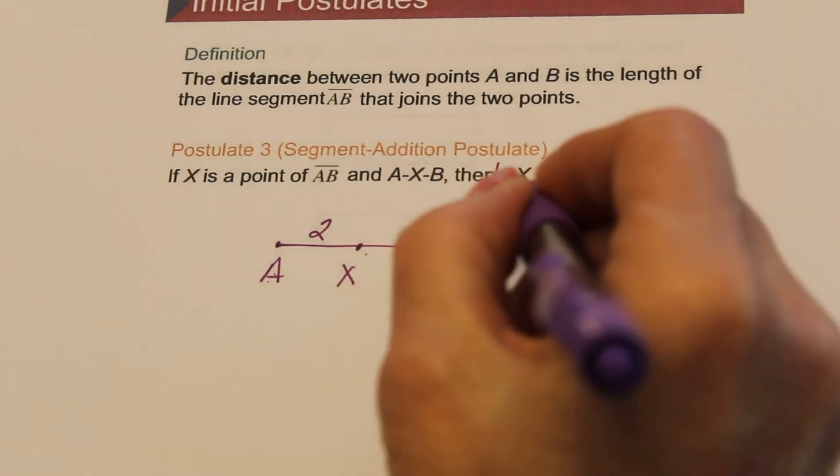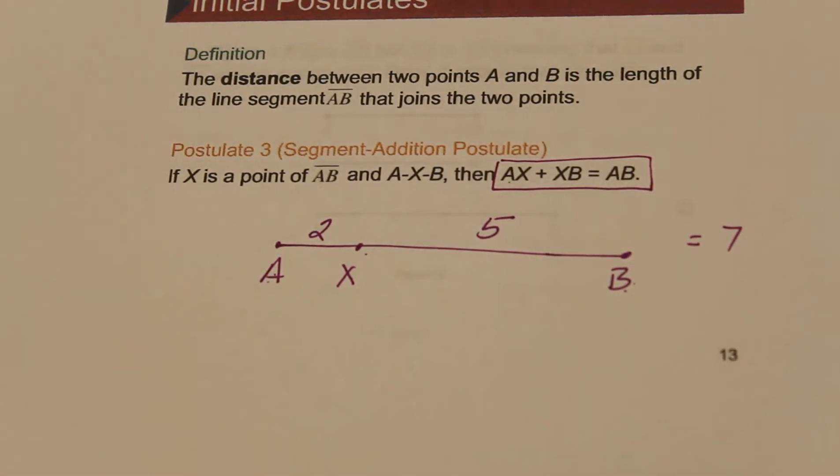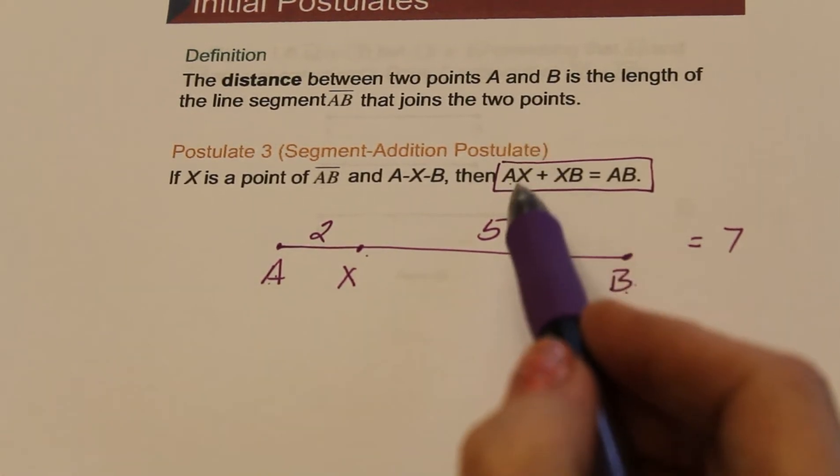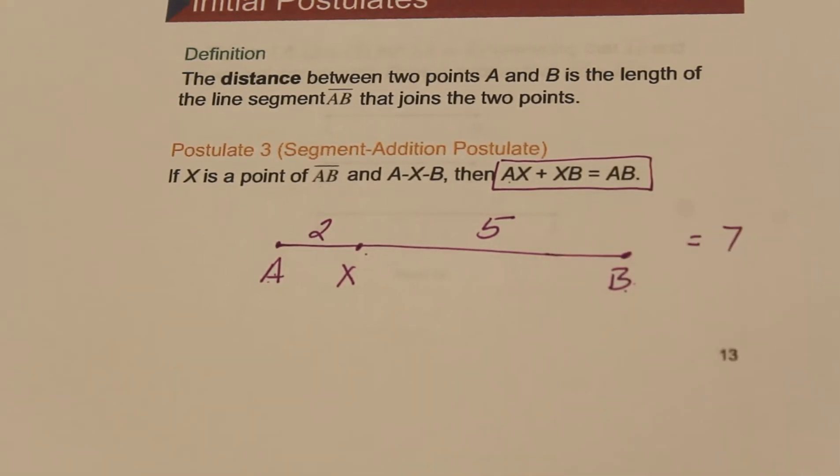So this is not just notation. This is the actual geometric statement: the length of AX plus the length of XB is equal to the length of AB.